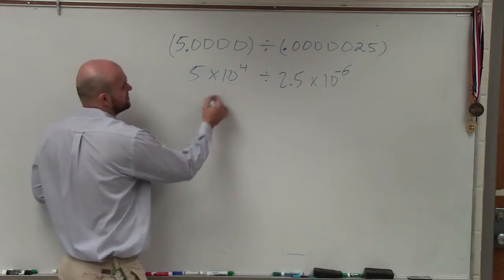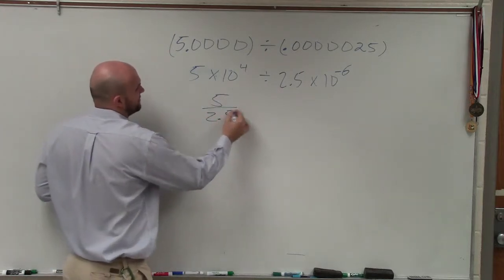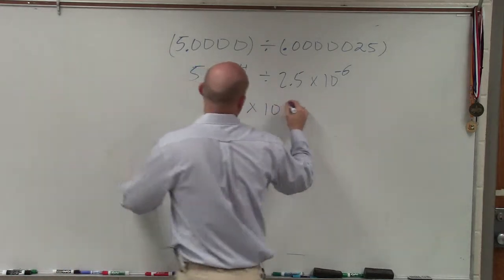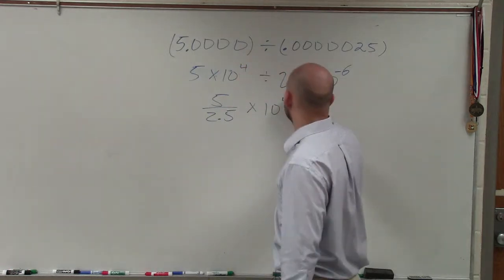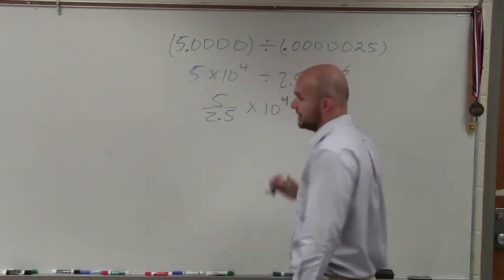When we're dividing, I'm simply doing 5 divided by 2.5 times 10. And when I divide, I subtract 4 minus a negative 6.